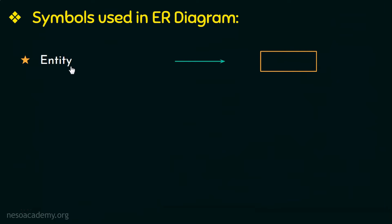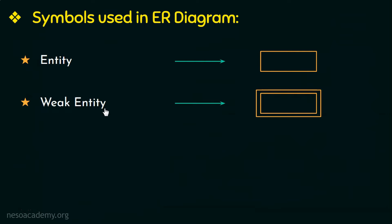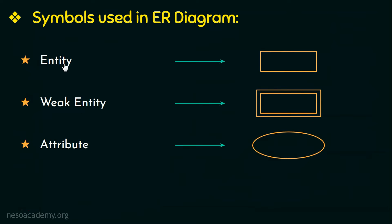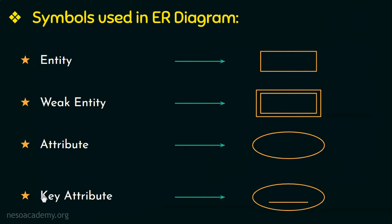The first symbol is entity. An entity is a thing or an object that has existence, and it is represented by a rectangle. This regular entity is also called a strong entity. Next we have the weak entity, which is represented by a double rectangle. An attribute is the property used to describe an entity and is represented by an oval. A key attribute, which helps in identifying an entity uniquely, is represented by an oval with an underline under the name of the attribute.